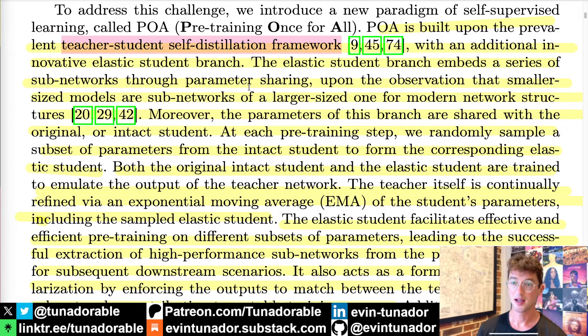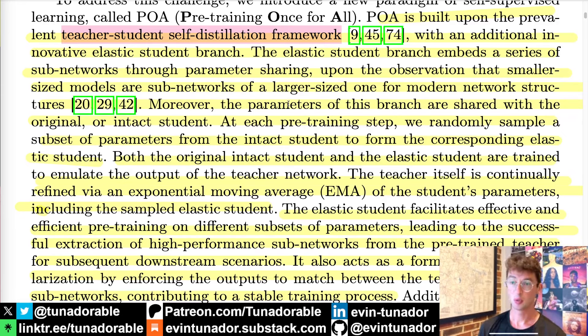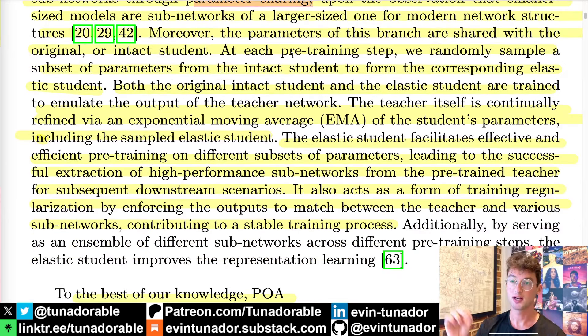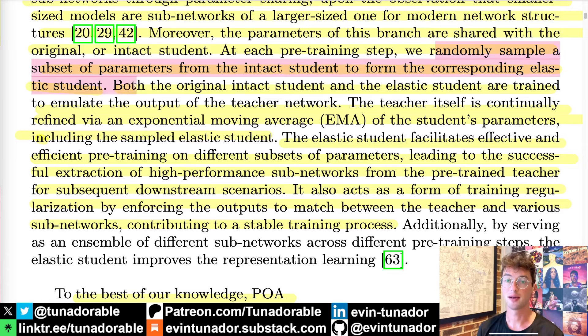There is an inelastic and an elastic student branch. Those are the two terms they use. These student branches have parameter sharing, meaning they're actually using the same parameters. And at each pre-training step, what they do for the elastic one is they randomly sample a subset of parameters from the intact student to form the corresponding elastic student. They want all of its sub-components to be separately working.